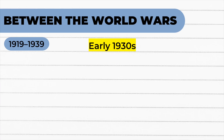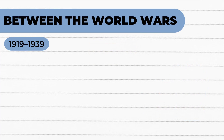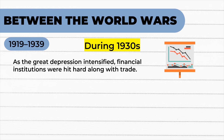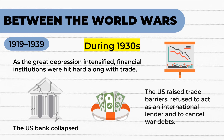By the early 1930s, the prevailing order was essentially a fragmented system of floating exchange rates. To protect their reserves of gold, countries would sometimes need to raise interest rates and generally follow a deflationary policy. As the Great Depression intensified in 1930, financial institutions were hit hard along with trade. In 1930 alone, 1,345 US banks collapsed, causing aggravated economic hardship for other countries.